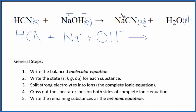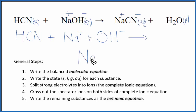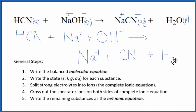On the product side, sodium has a 1+ charge. The cyanide ion has a 1- charge — these are things you either remember or look up on a table of common polyatomic ions. So we have Na+, and then we have the cyanide ion, which is CN-, and then water. We don't split liquids apart in net ionic equations, so that's just H2O.